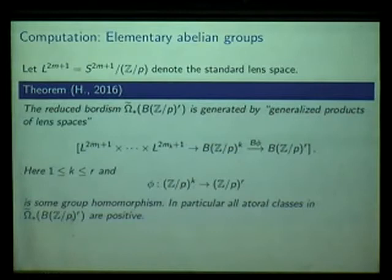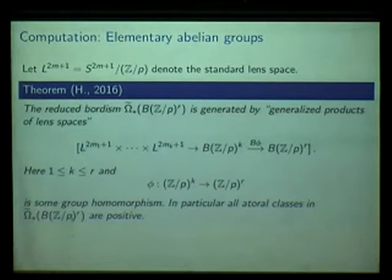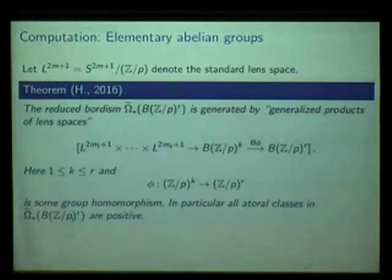Which classes here are positive, i.e., which can be represented by positive scalar curvature manifolds? This is the case once at least one of these lens spaces has dimension larger than one, because then you divide out a Z/p action on a 3-sphere or 5-sphere and you have positive scalar curvature, no problem. The only remaining problem is when you take a product of one-dimensional lens spaces — that is, circles — giving a torus mapping to BZ/p^r, and then we cannot say if the corresponding class is positive or not.